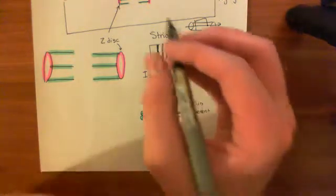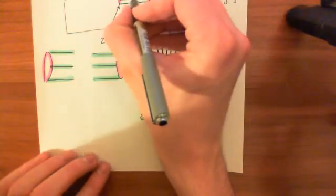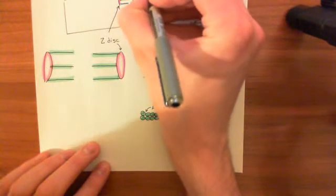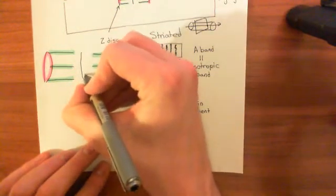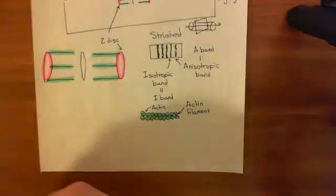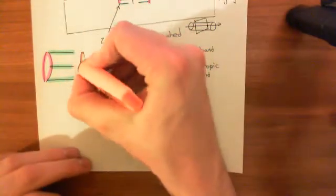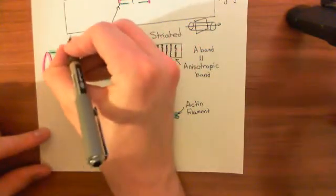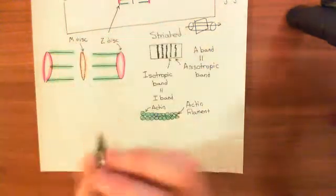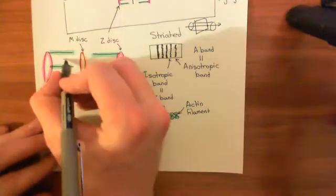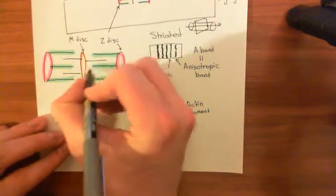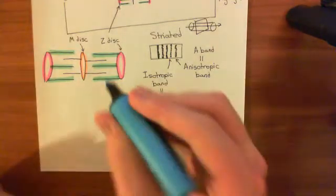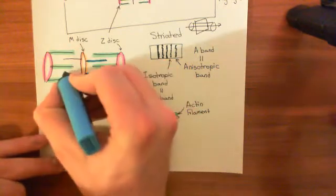In between the actin filaments, you have another protein disc known as the M-disc. So you have another disc of protein in the center, and this is called the M-disc — I'll draw this in orange. The M stands for myosin, as you'll see in a moment. We also have filaments coming off the M-disc going both ways, overlapping with the actin filaments. These filaments coming off the M-disc are myosin filaments, shown here in blue.